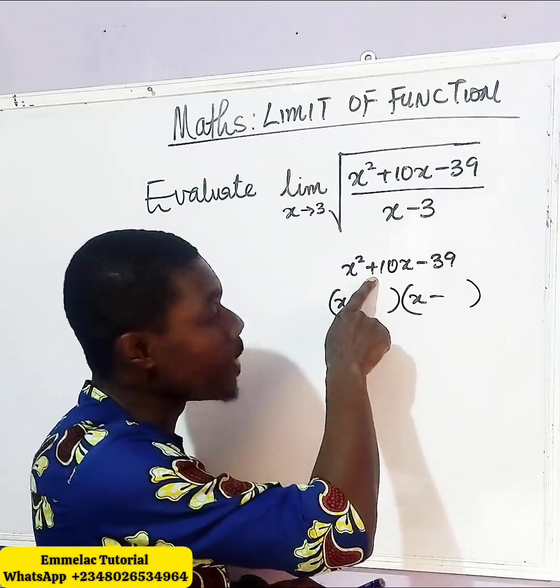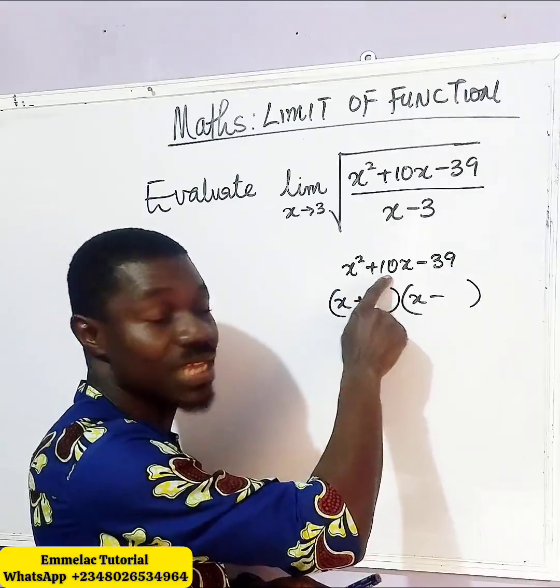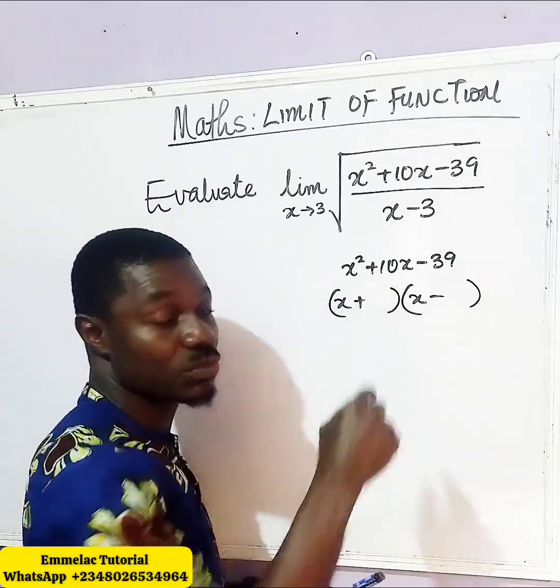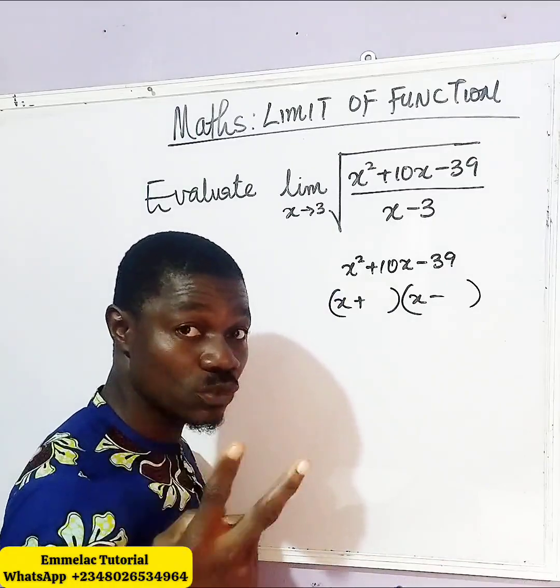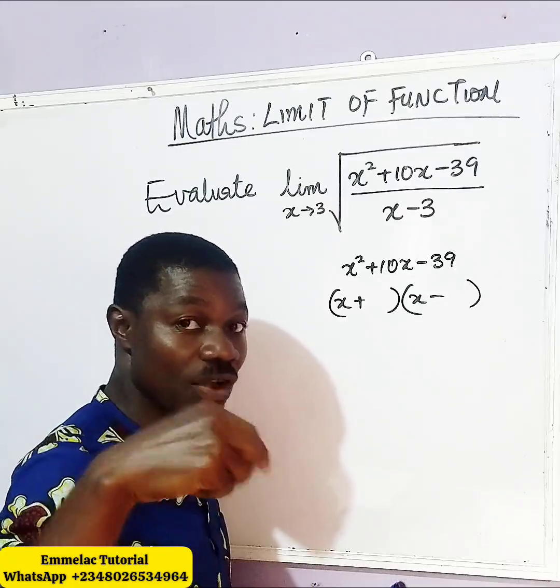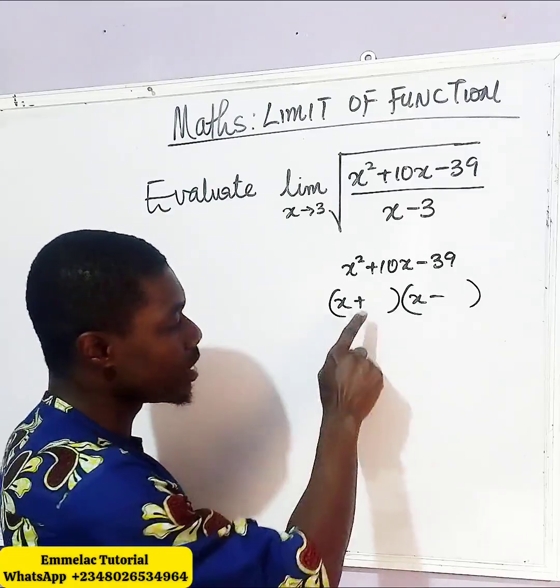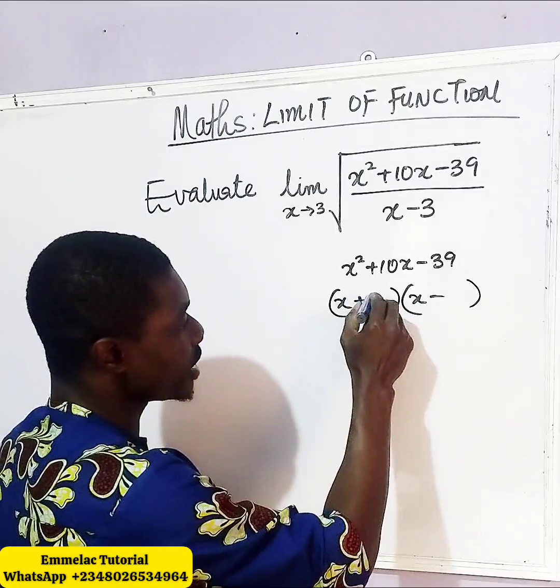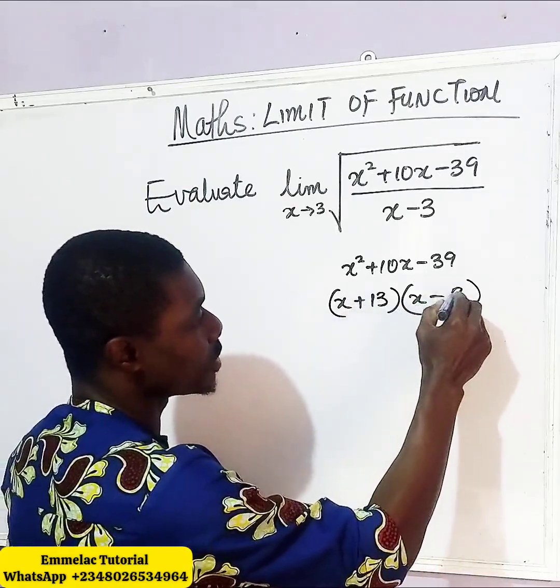Since the linear term here is positive, it means the bigger factor of the two factors will be positive here. So, here you have your 13 and here you have your 3.